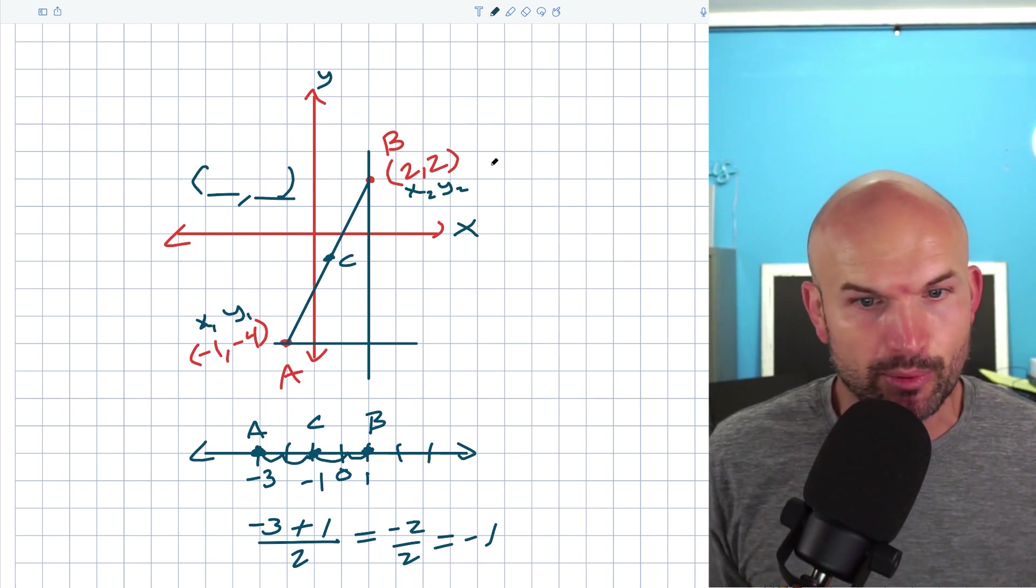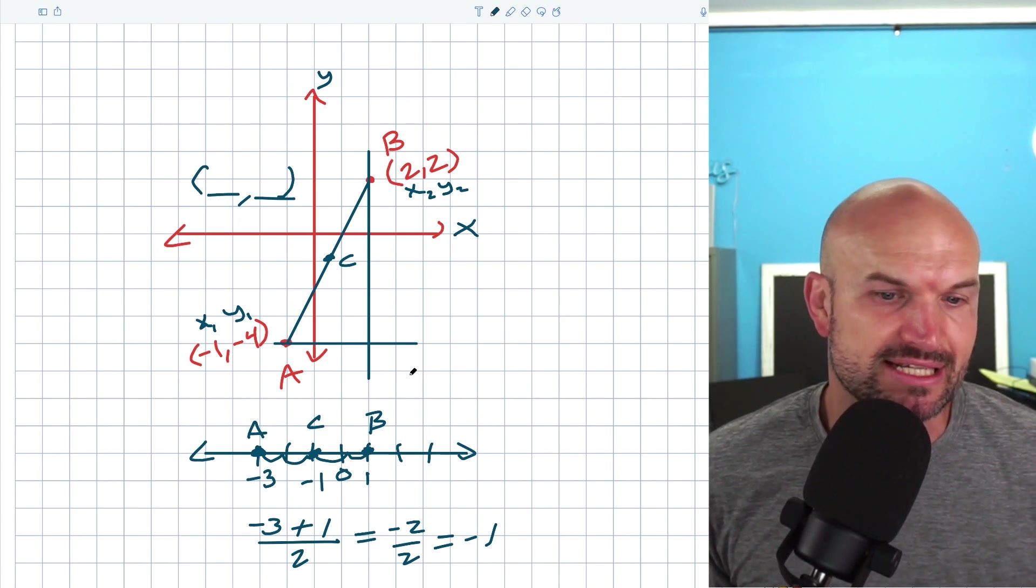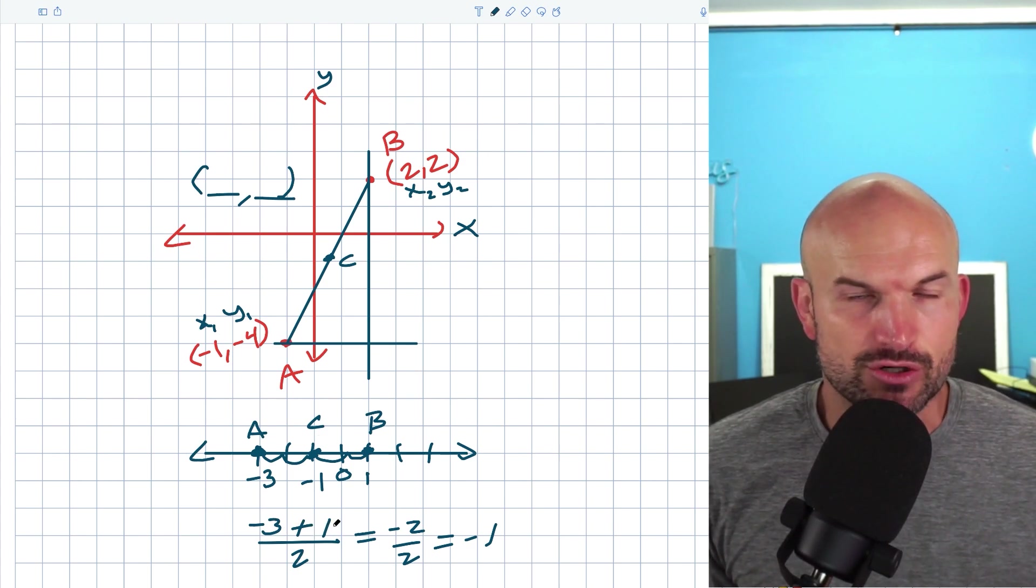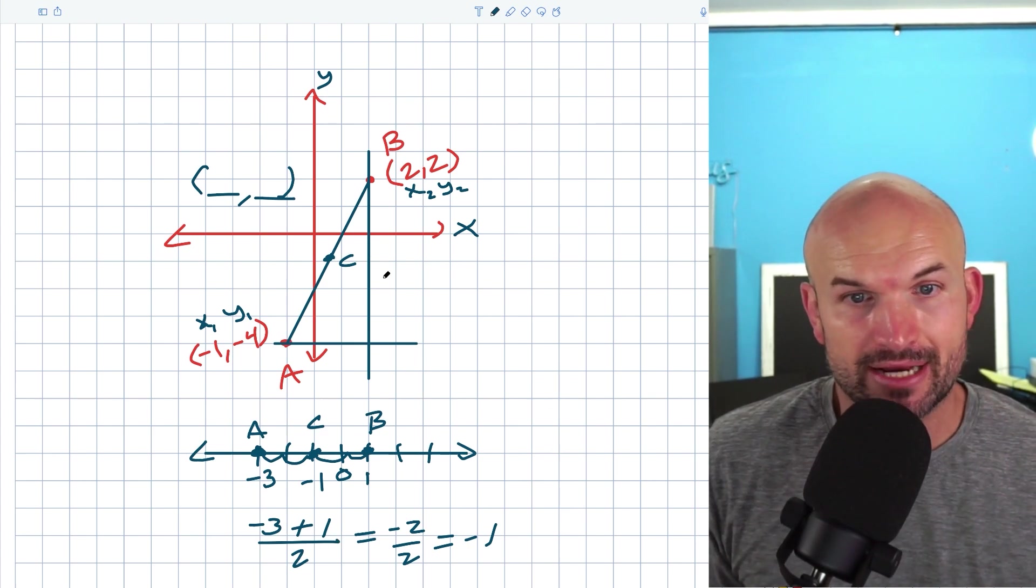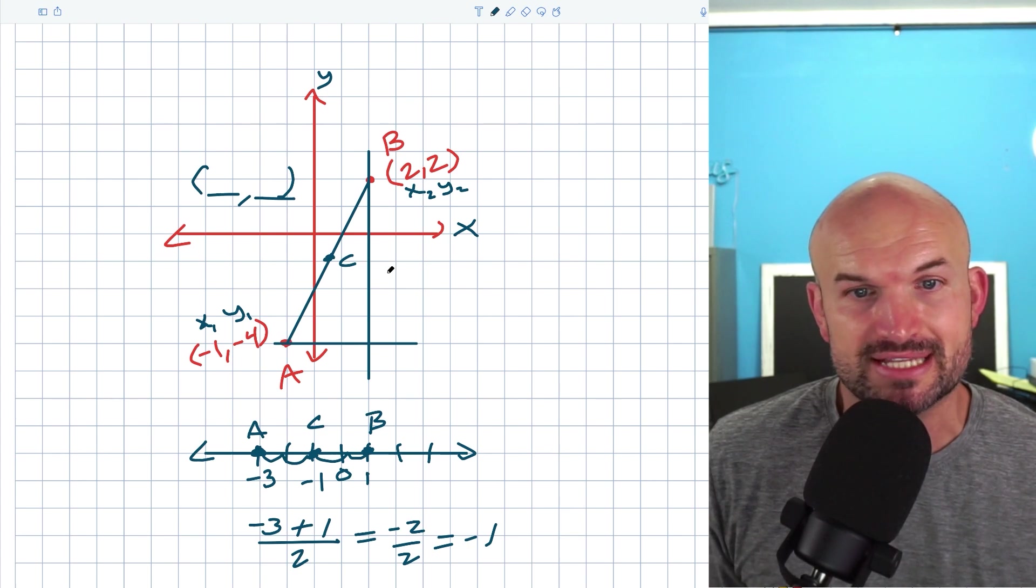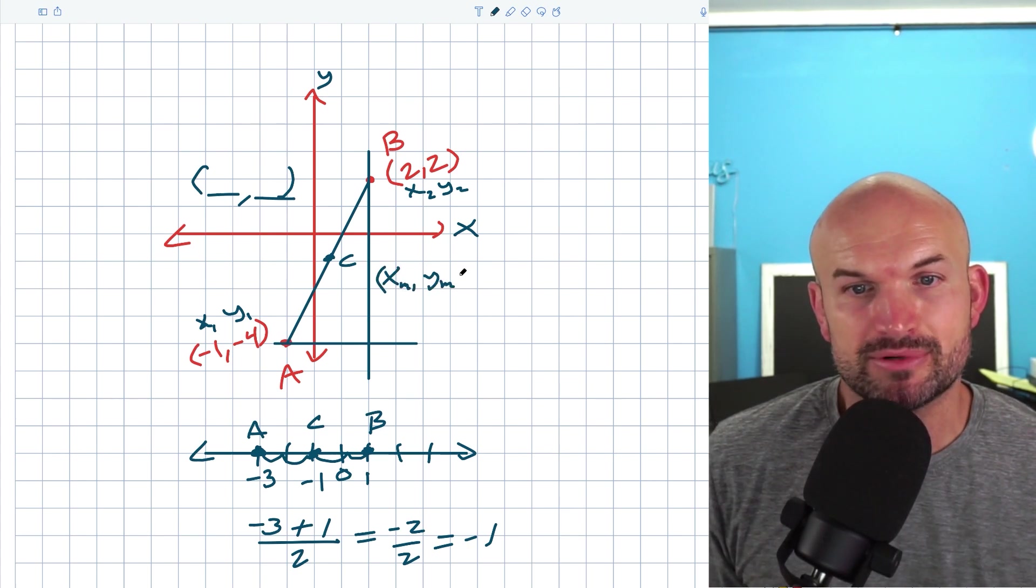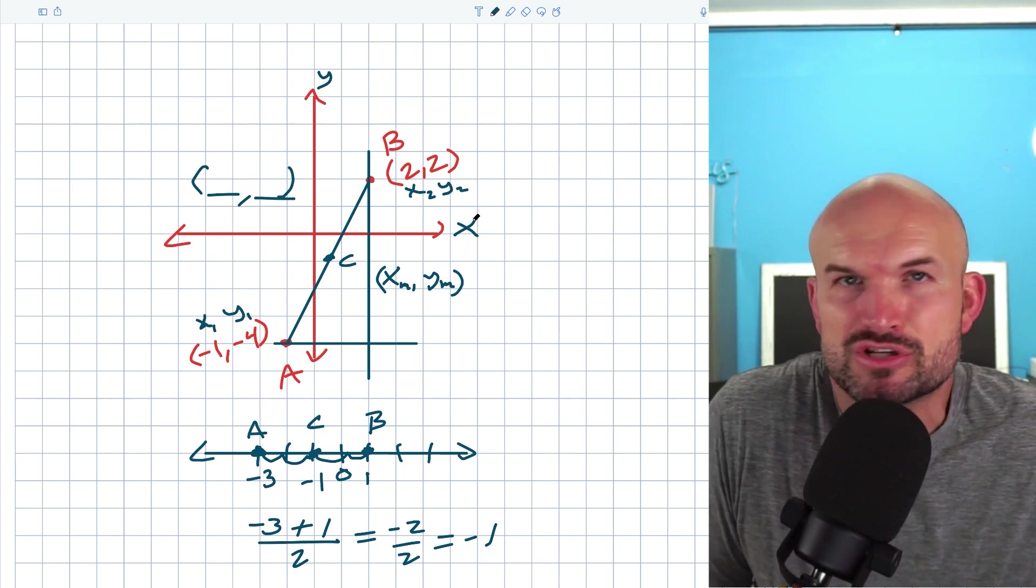Now I'm going to go ahead and throw out the midpoint formula, but I want you to be able to see all it simply is, is just adding my two X coordinates divided by two and adding my two Y coordinates and dividing it by two. So I'm going to call C, and that's going to be my midpoint. So I'm going to call this actually X_M and Y_M. Okay, so I'm just going to use the subscripts as M. You could use three if you wanted to.